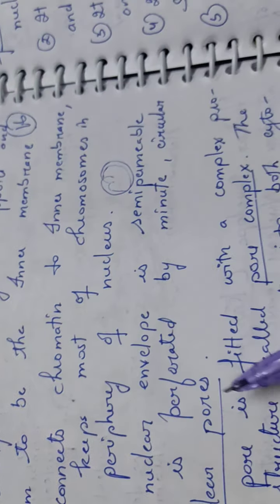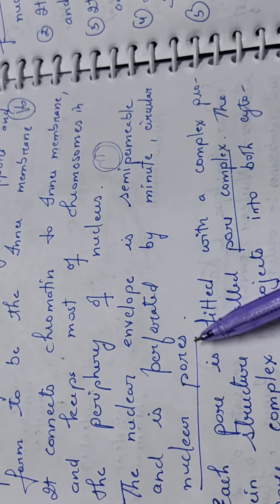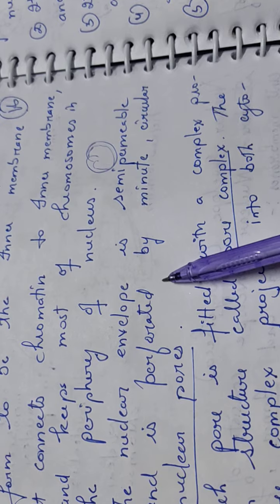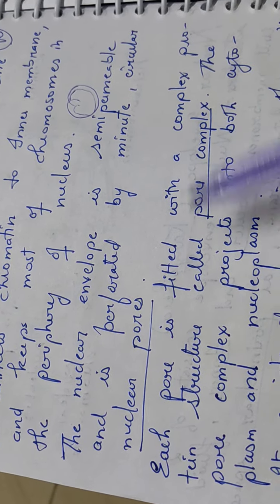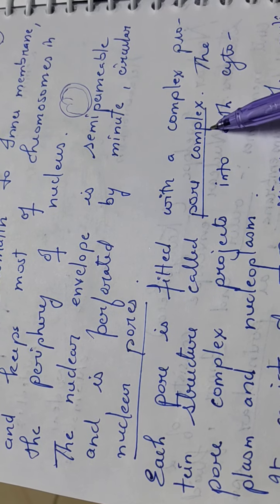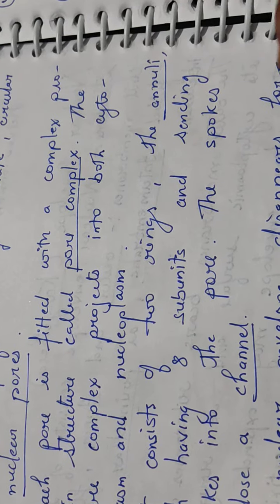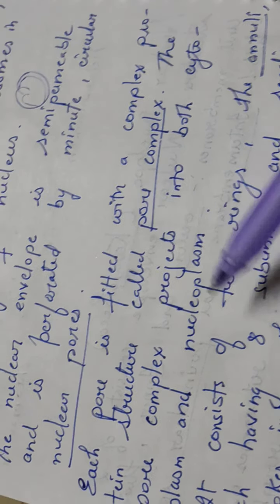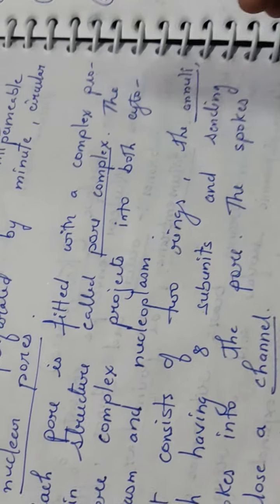The nuclear envelope is semi-permeable and is perforated by minute and circular nuclear pores. Each pore is fitted with a complex protein structure called pore complex. Each pore has a protein that is fit, that protein is the pore complex.